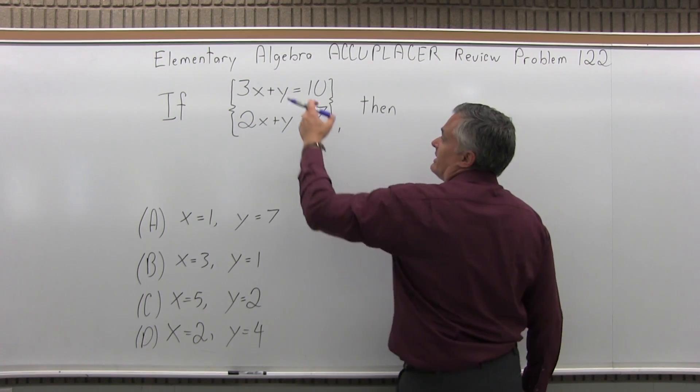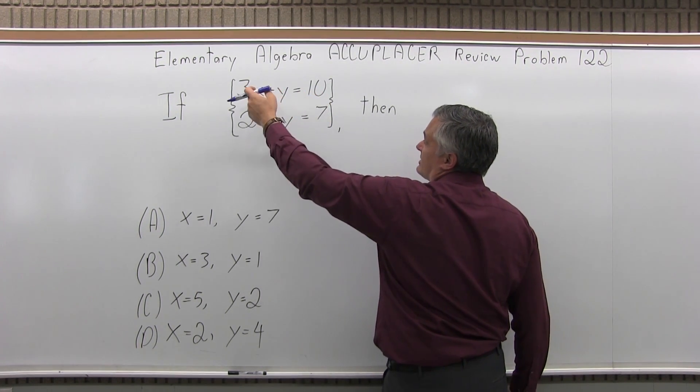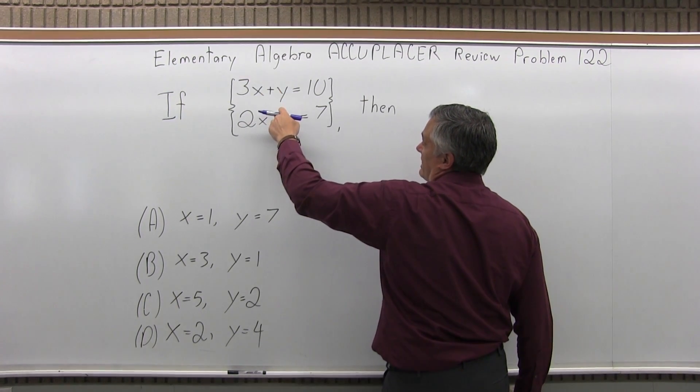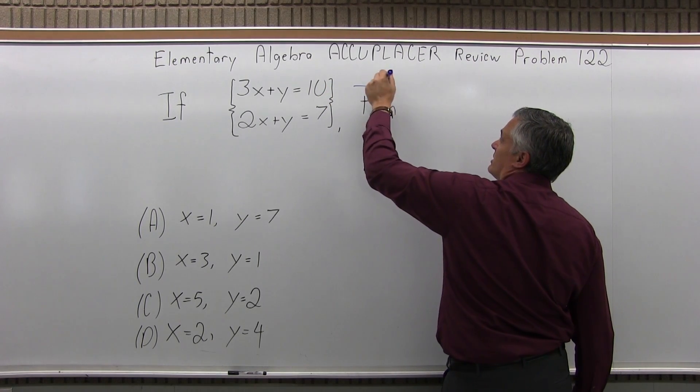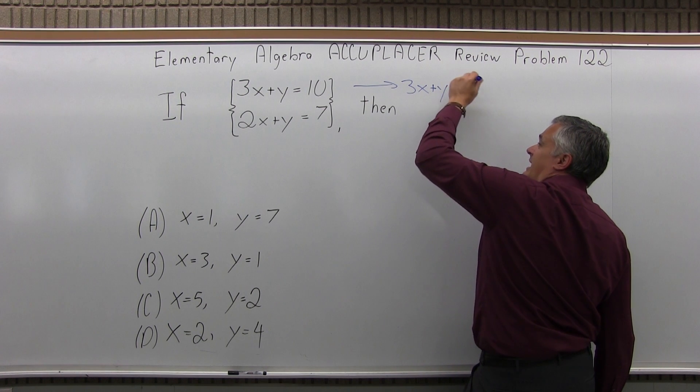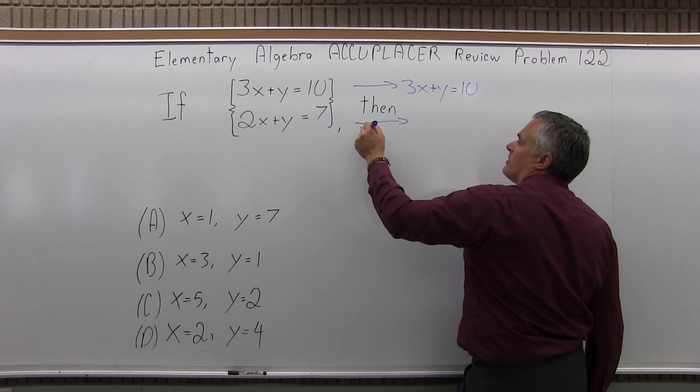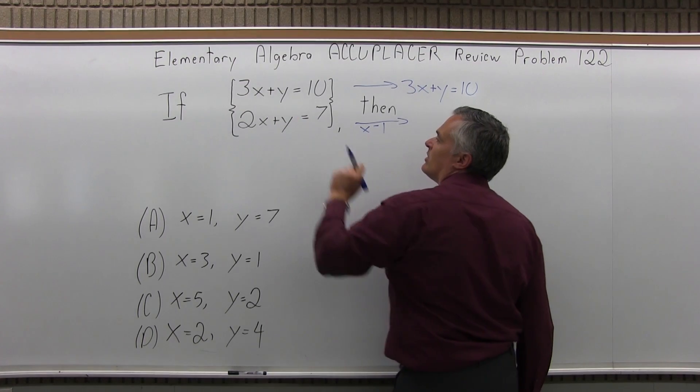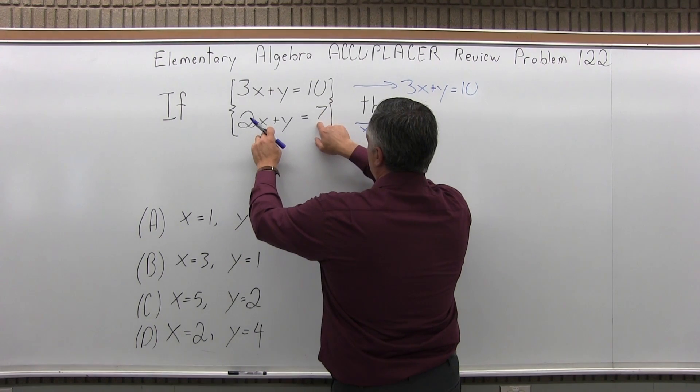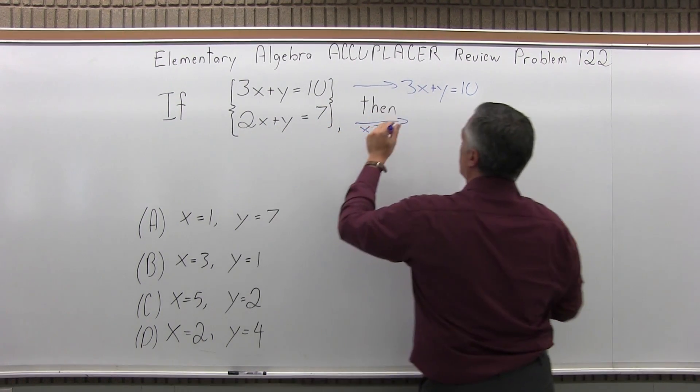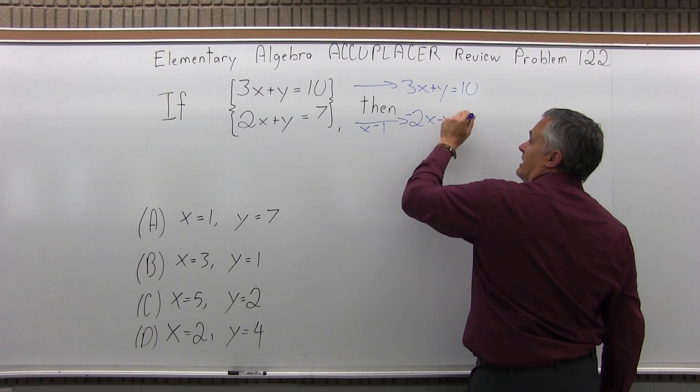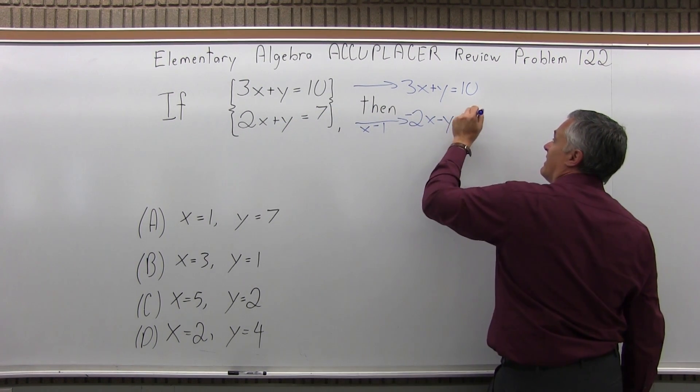The other way you could do it is add the equations together and cancel the variable. You'd want to make either a 6x and a negative 6x or a positive y, negative y. The y's will cancel more easily. So let me bring the top equation over as is, 3x plus y equals 10. I'll bring the bottom one over, but everything's going to go times negative 1, so I'll have the same 1 in front of the y but with the opposite sign. Times negative 1, I'll have negative 2x, then the y will be negative y, then equals negative 7.